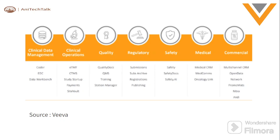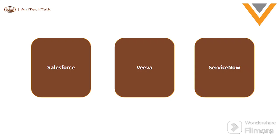The next topic is about Salesforce, Veeva, and ServiceNow. The reason I'm using Salesforce and ServiceNow as examples is that they are all growing companies in their own fields. Salesforce is a Customer Relationship Management platform, Veeva is a content management platform, and ServiceNow is a ticketing platform. The key point is that they are all cloud platforms and follow the SaaS (Software as a Service) model, just like Veeva.